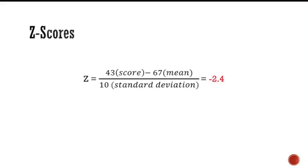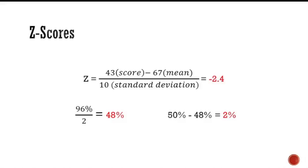95 divided by 2 equals 48 percent. Since 50 percent of the data is less than the mean on a normal curve, 50 percent minus 48 percent equals 2 percent who have scored less than a 43 on the aptitude test.